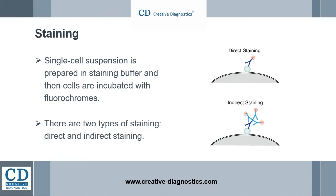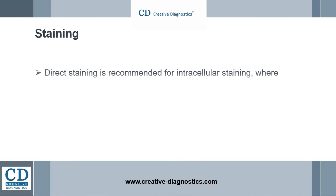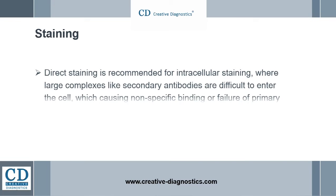In indirect staining, two antibodies are involved: the primary antibody recognizes the targets but is not fluorophore-labeled; instead, it is detected by a fluorophore-conjugated secondary antibody. Direct staining is recommended for intracellular staining, where large complexes like secondary antibodies are difficult to enter the cell, causing nonspecific binding or failure of primary antibody detection.